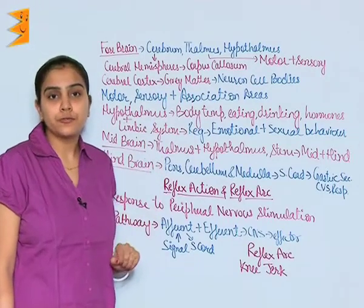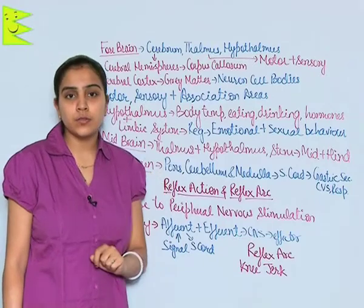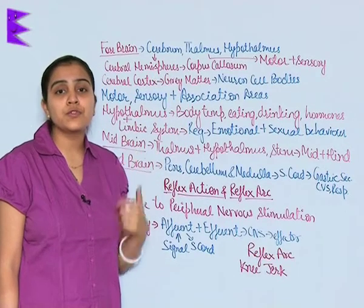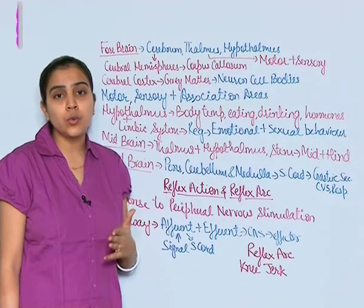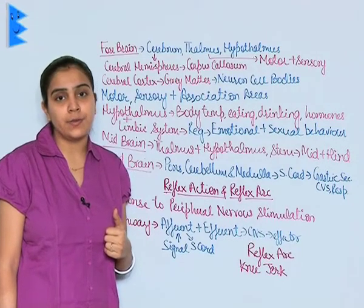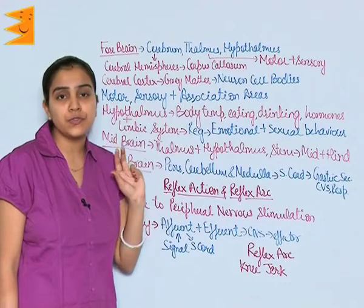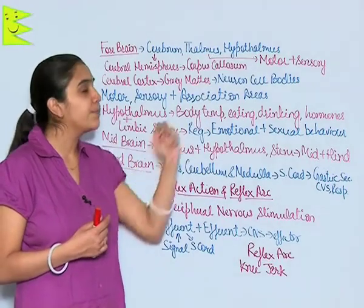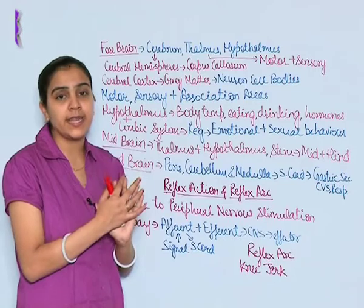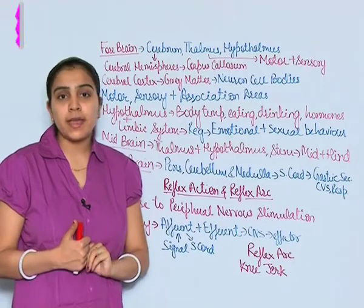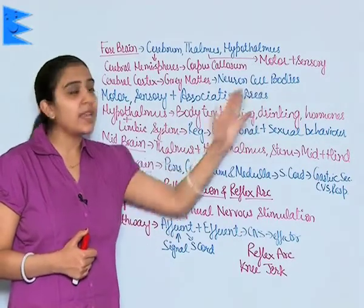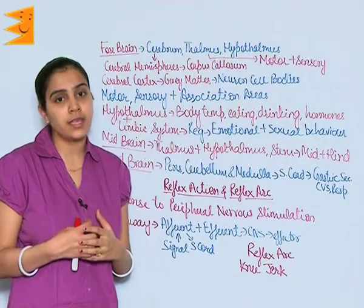The first part of the brain is the forebrain, which is further divided into three parts: cerebrum, thalamus, and hypothalamus. The cerebrum is further divided into two hemispheres — the right cerebral hemisphere and the left cerebral hemisphere — and these two hemispheres are interconnected by the corpus callosum. The cerebrum is protected by an outer layer known as the cerebral cortex, also called grey matter, because the cell bodies of neurons are concentrated in this region.